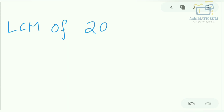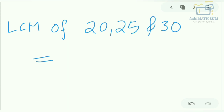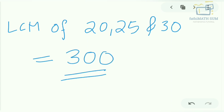So we can conclude that by the division method, the LCM of 20, 25, and 30 is equal to 300. I hope this is clear to everyone. Thank you for watching.